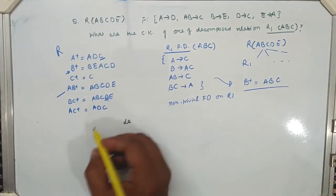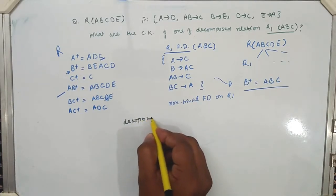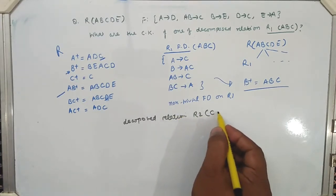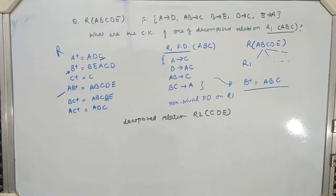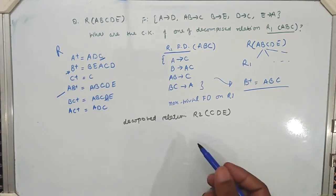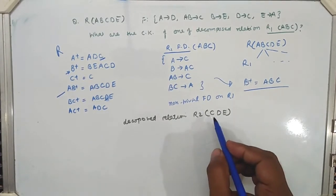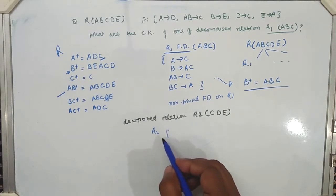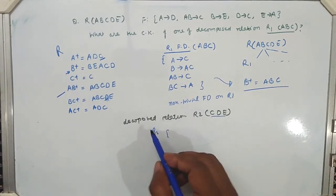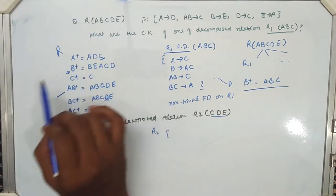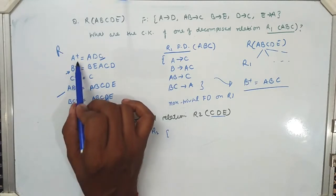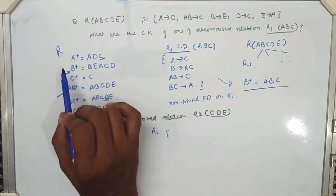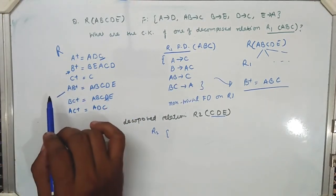Now for the second decomposed relation on the same relation R: suppose R2 is given as C, D, and E. What would be the candidate key for R2? The process is the same — we need to calculate the functional dependency set for R2. We have C, D, and E, so we check the functional dependencies. There is no need to check A+ or B+ since we only require C, D, and E on the LHS.